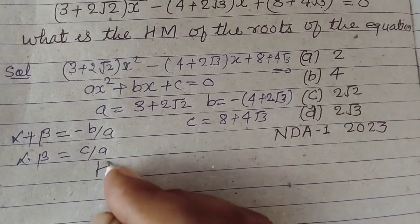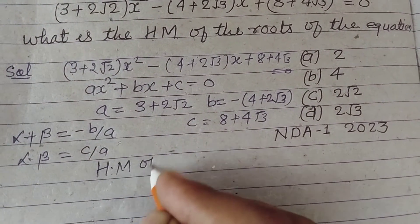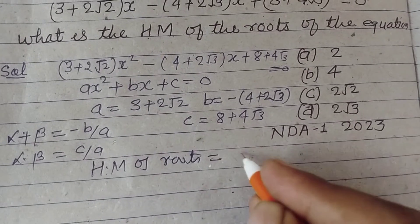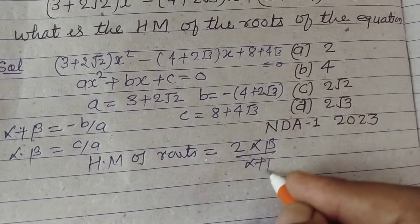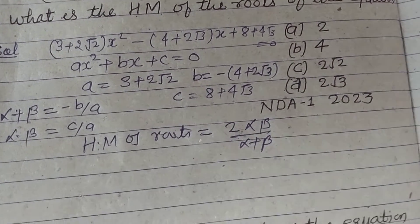So the harmonic mean of roots equals 2αβ/(α + β).